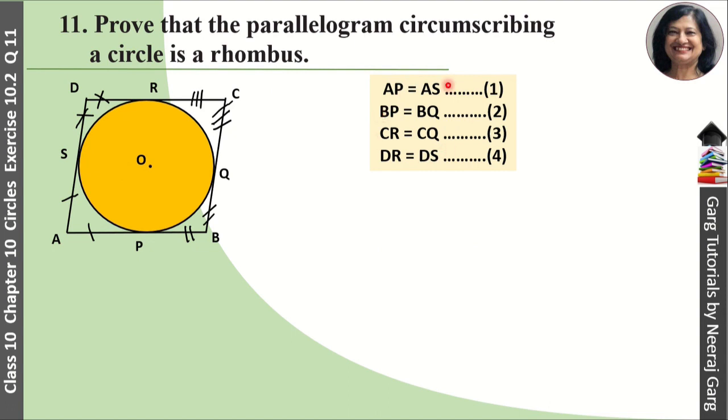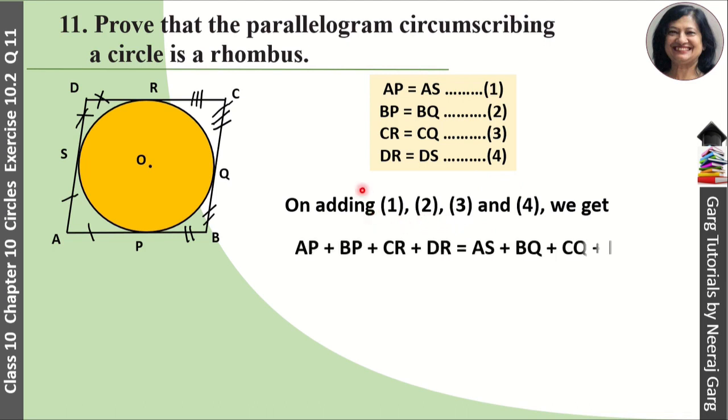We have these four results. Now we will add these four equations. When we add, so AP plus BP plus CR plus DR equals AS plus BQ plus CQ plus DS. After that, we have to reshuffle it.